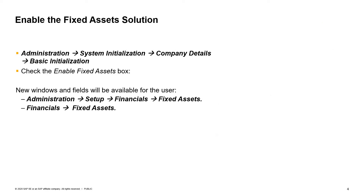Let us start by reviewing the submenu and windows in SAP Business One. To enable the Fixed Assets solution, go to the Basic Initialization tab in the Company Details window and select the Enable Fixed Assets checkbox. Once checked, the Fixed Assets functionality will be activated and new windows and fields will be available under Administration, Setup, Financials, Fixed Assets, and under Financials, Fixed Assets.